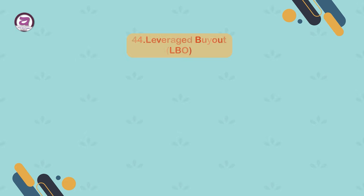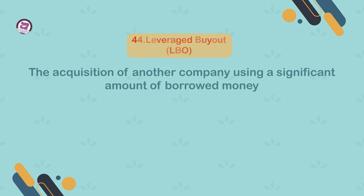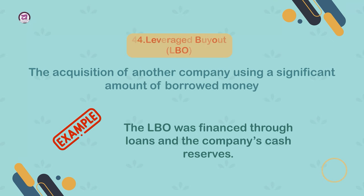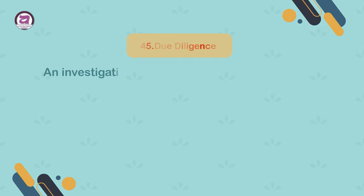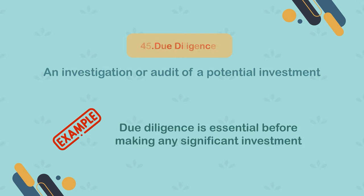44. Leveraged buyout (LBO). The acquisition of another company using a significant amount of borrowed money. Example: the LBO was financed through loans and the company's cash reserves. 45. Due diligence. An investigation or audit of a potential investment. Example: due diligence is essential before making any significant investment.